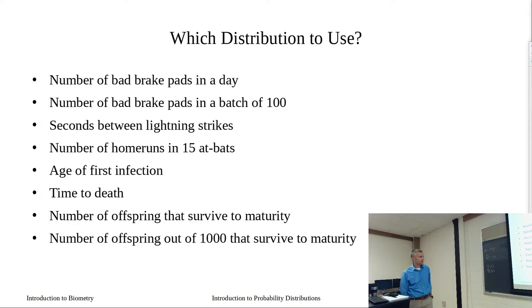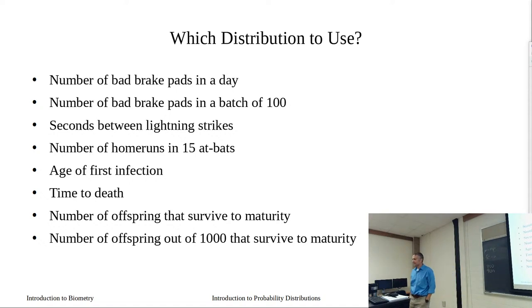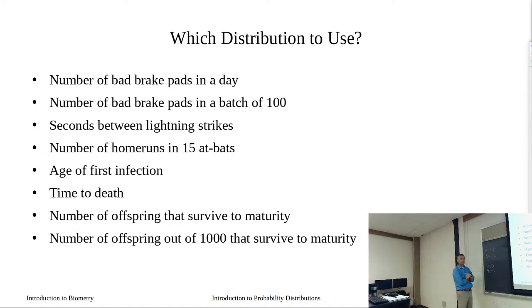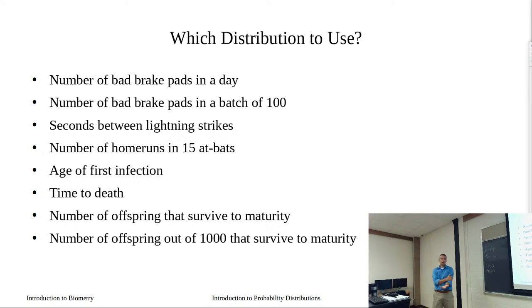This is for a reason — because I can have a problem where I ask you a probability, and if you choose the wrong distribution you get the answer wrong. On our exam, we'll have something like this where you have to recognize what probability distribution to use. Then when I actually ask you to calculate the probability, I'll say use the binomial distribution, calculate this probability — or use the Poisson distribution, calculate this probability.